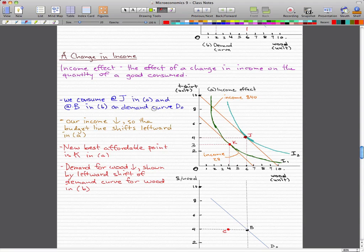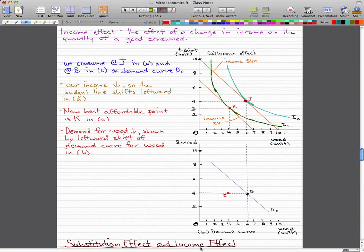So we consume at J originally in A and at B on figure B, on demand curve D0. So that's what we have initially.